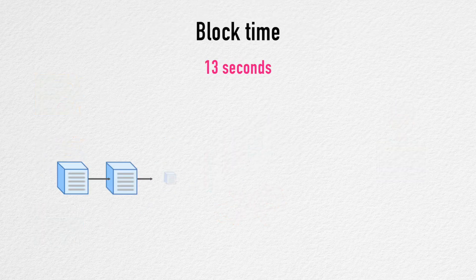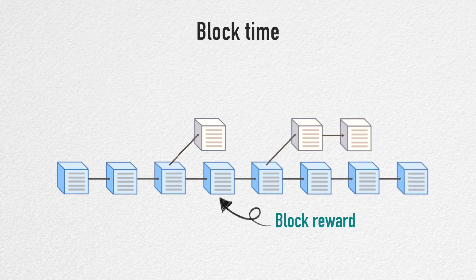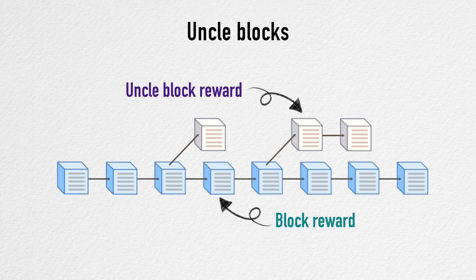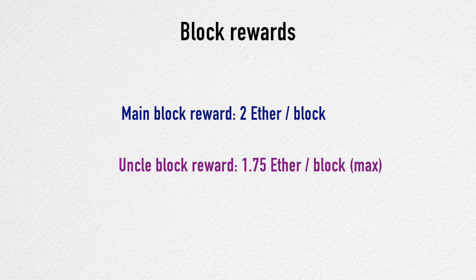In Ethereum, new blocks are created about every 13 seconds. A shorter block time translates to a higher chance of duplicate blocks from different miners. The blocks that are part of the main chain will get the block reward, and the ones that didn't make it to the main chain could become an uncle block, which gets the uncle block reward — smaller than the block reward. New tokens are issued in the form of block rewards, currently set to 2 Ether per block, and an additional 1.7 Ether per uncle block.